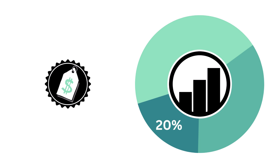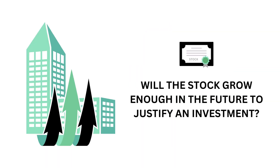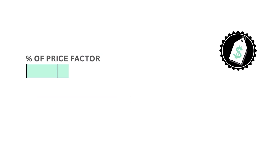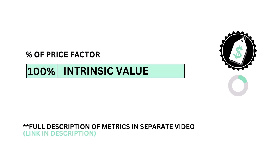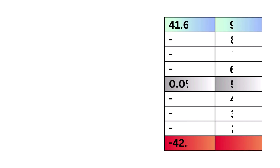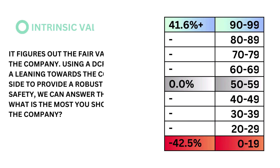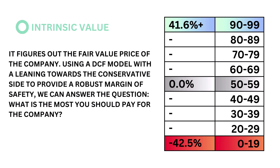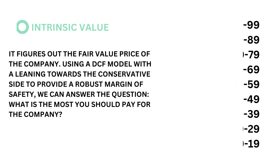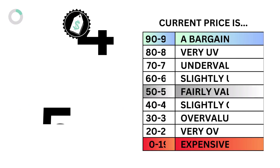Let's then look at the price. The price factor accounts for 20% of the analysis. The price asks the question: what is the most you should pay for the company? The price factor consists of only one metric, the intrinsic value. The intrinsic value figures out the fair value price of the company. Using a discounted cash flow model with a leaning towards the conservative side to provide a robust margin of safety, a stock price higher than the fair value price is considered overvalued, and a stock lower than that is considered undervalued. The models tell us that an intrinsic value of 0% is considered fairly valued. Here's our intrinsic value and price grade.